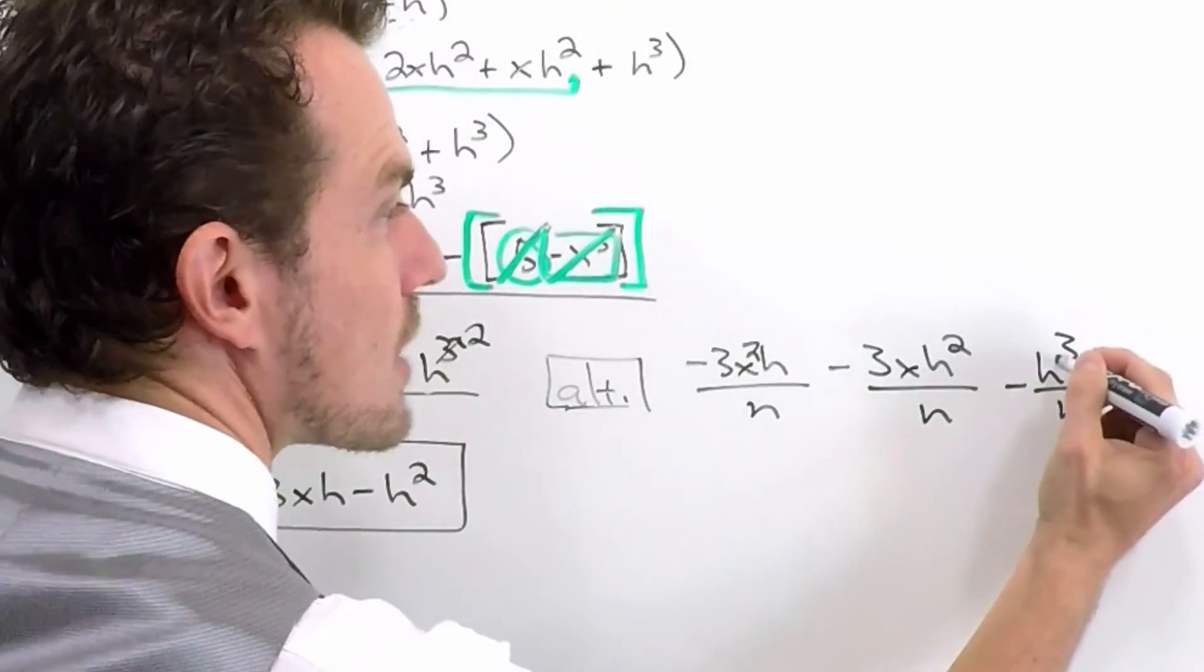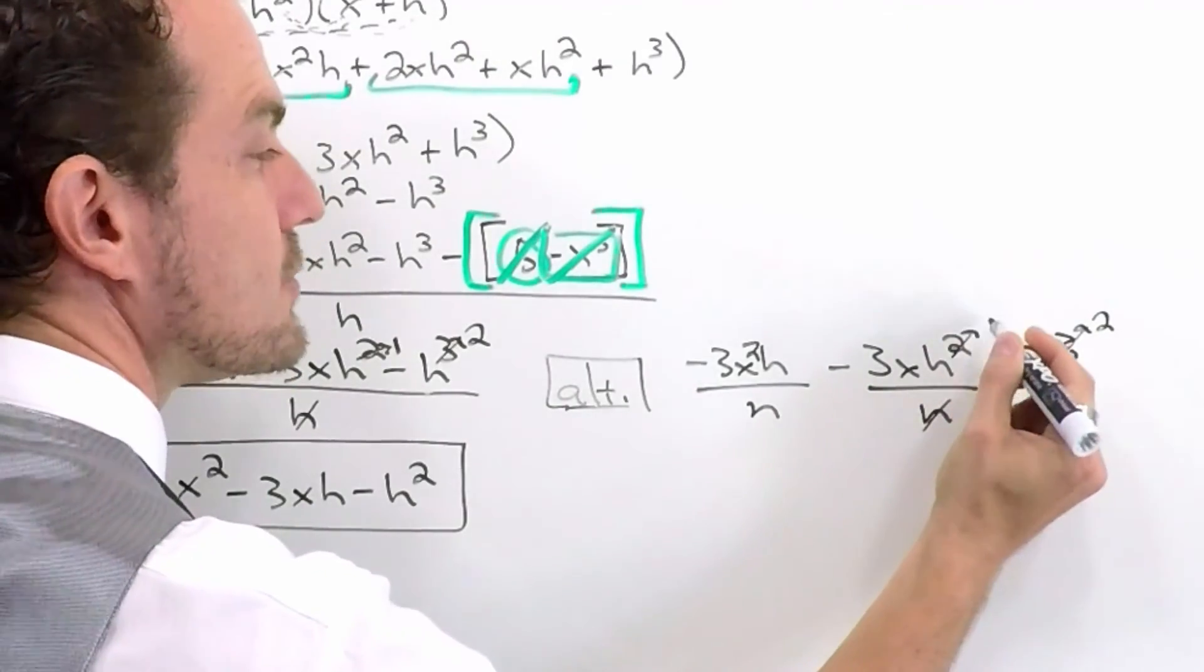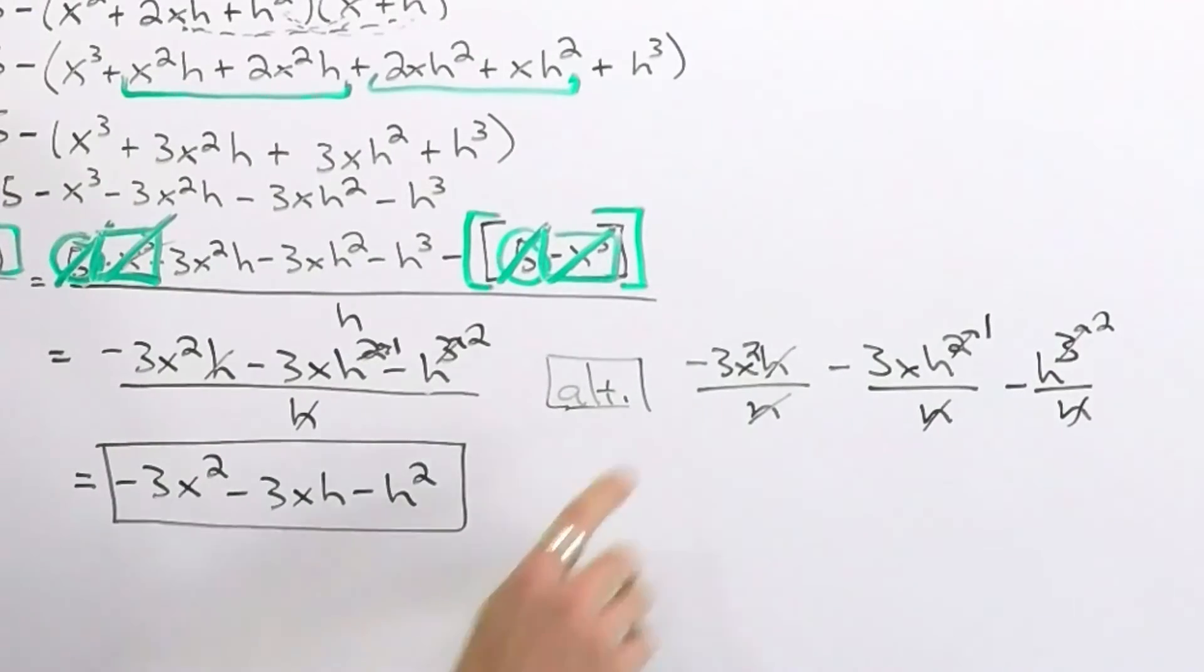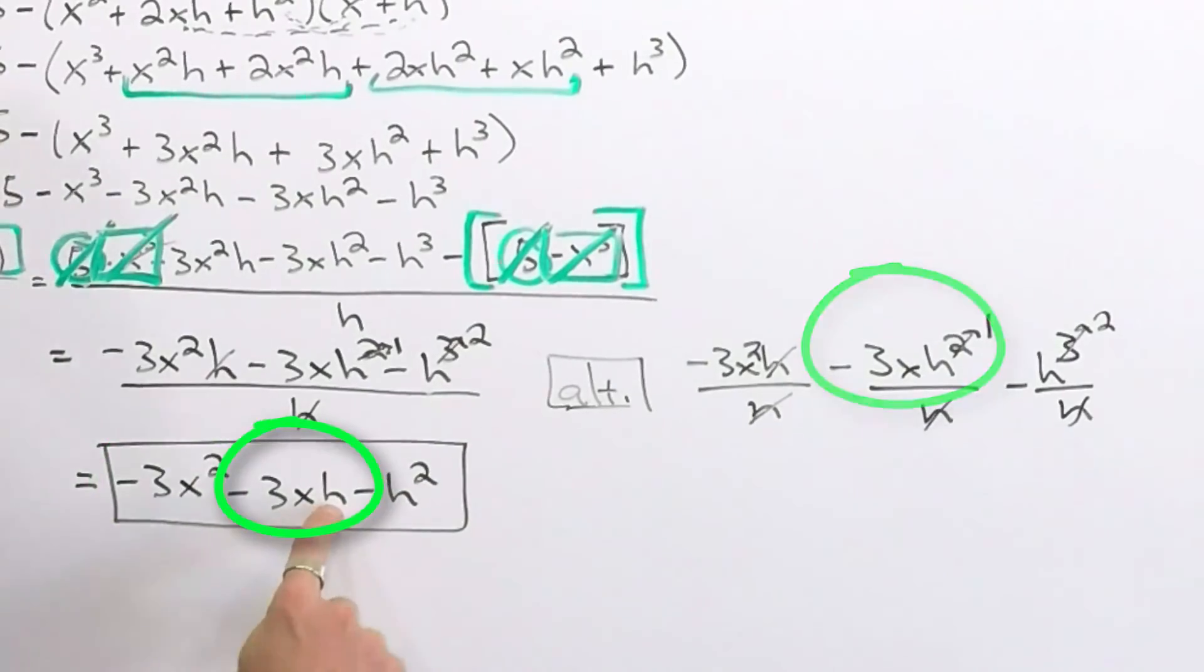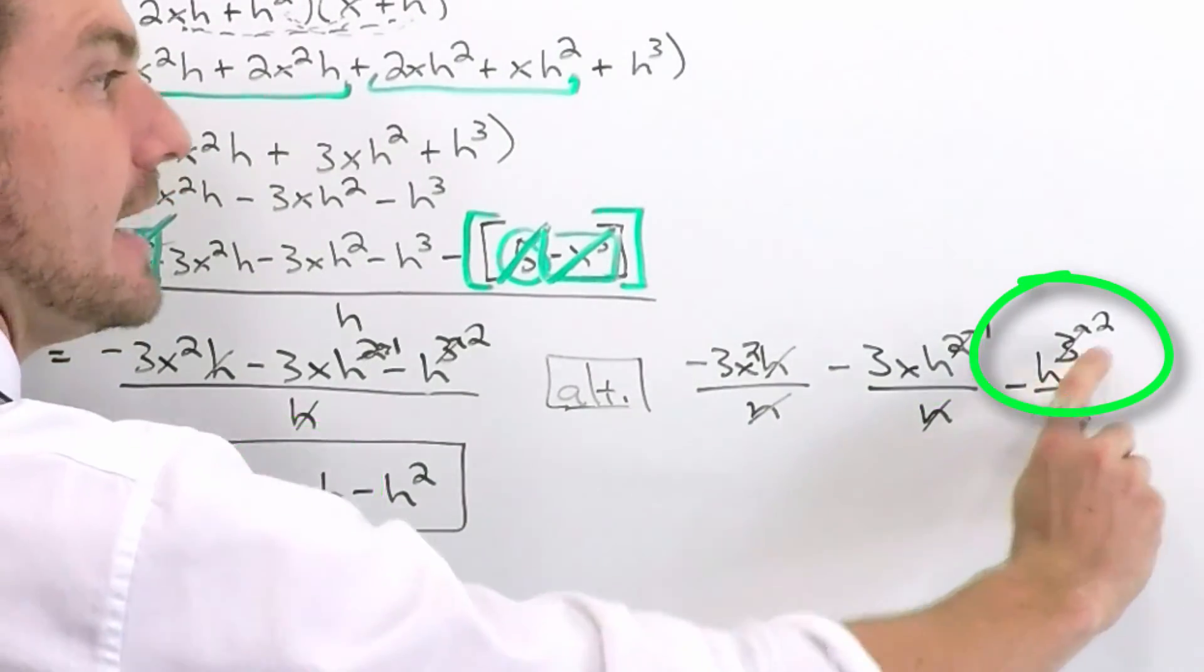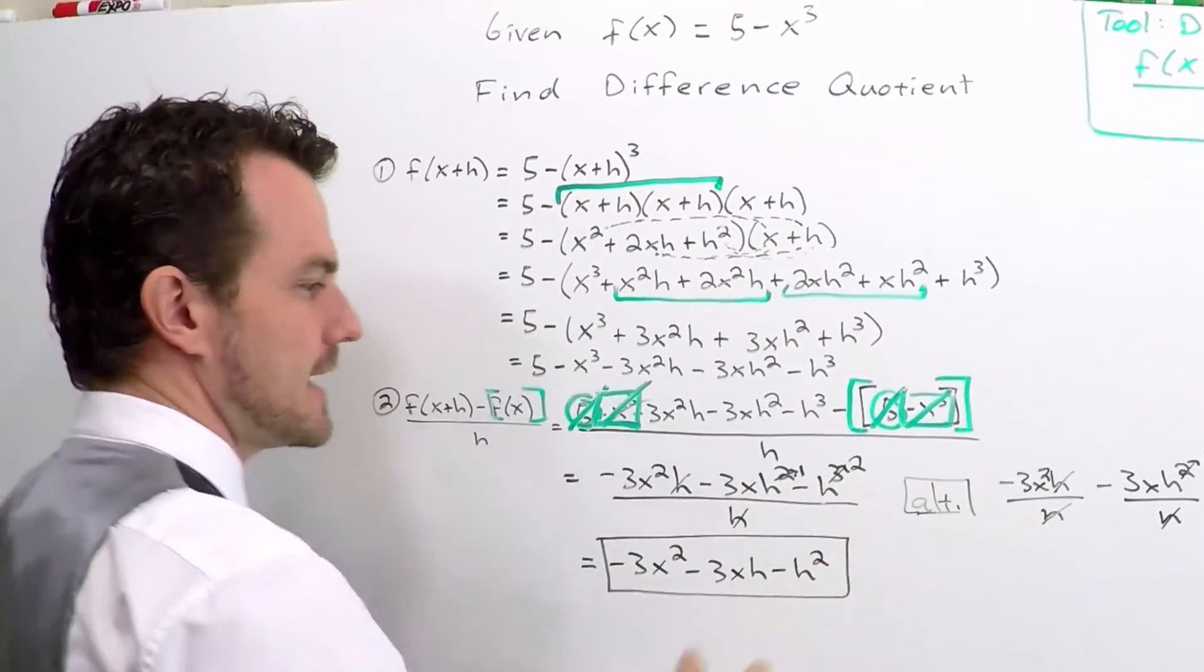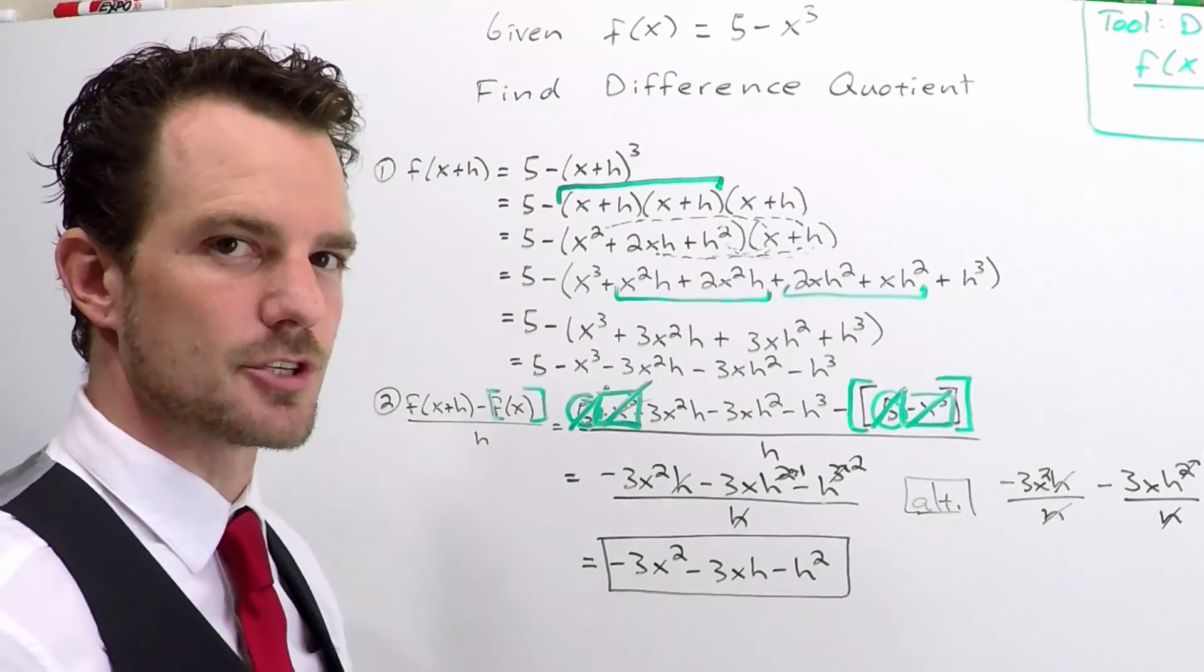h here drops a power of 3 to a power of 2. h here kills the power of 2 and brings it down to 1. h here kills this h off. So we're left with minus 3x squared minus 3x h with a single power minus, at the end, h with the new power of 2. So sometimes it's easier to think about it this way. Once you catch on, though, you can just start canceling them here, and you'll always get this right if you know what you're doing.